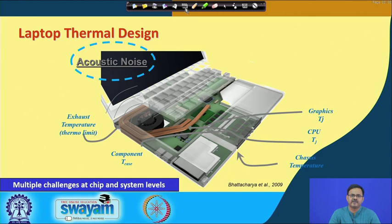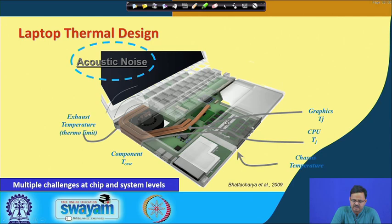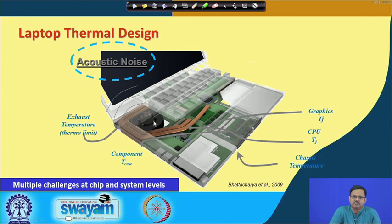As the fan runs, it sucks in ambient air through the various openings and vents. That ambient air flows over different heat-generating components — memory, lower-power dissipating components, voltage regulators — and picks up heat as it goes. Finally, it reaches the fan where it is pressurized, then thrown out through the heat exchanger, also picking up the heat transported by the heat pipes from the CPU and other components.